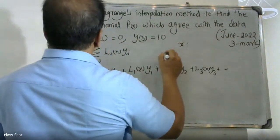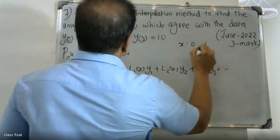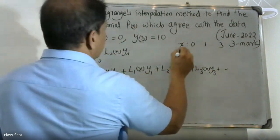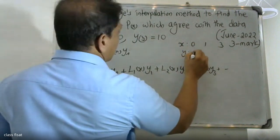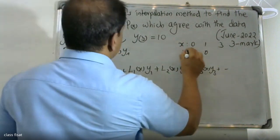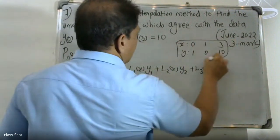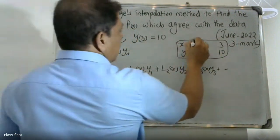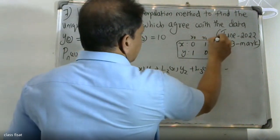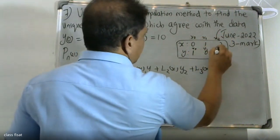The x values are x0=0, x1=1, x2=3. Correspondingly, y0=1, y1=0, and y2=10. These are our known data points: X0, X1, X2 and Y0, Y1, Y2.